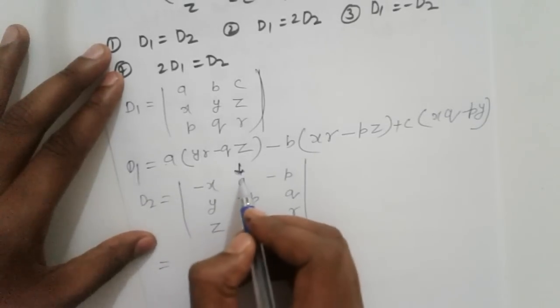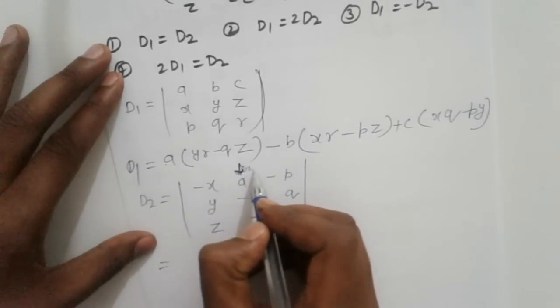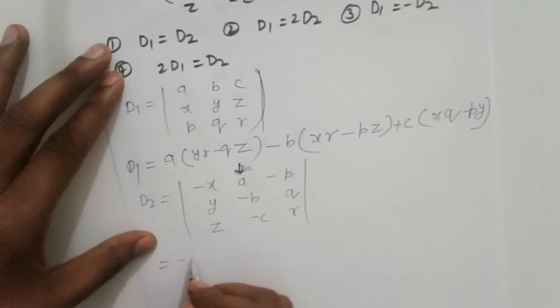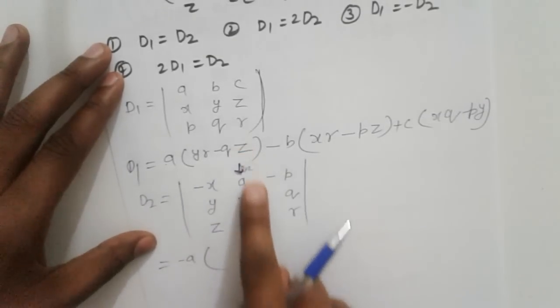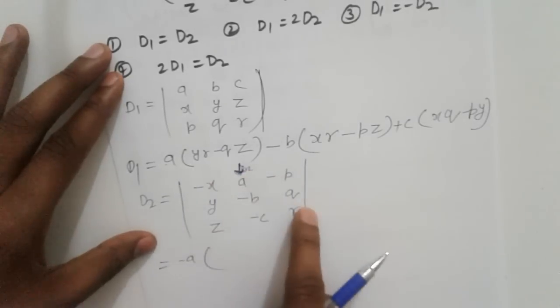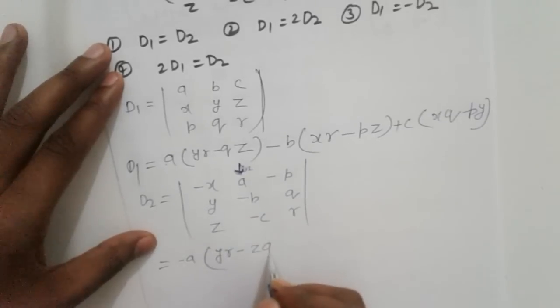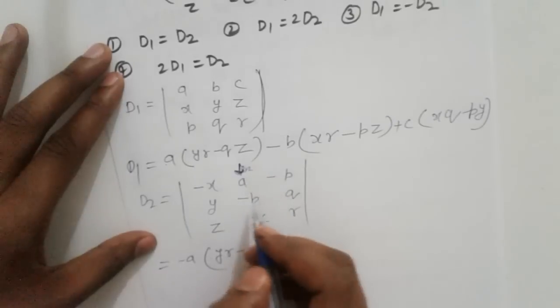Expanding according to the second column: element A₁₂ is A. This gives minus A times (YR - ZQ), the determinant obtained by hiding the first column and second row.